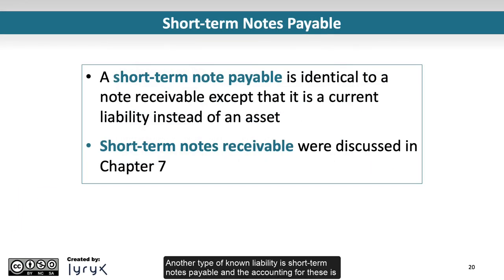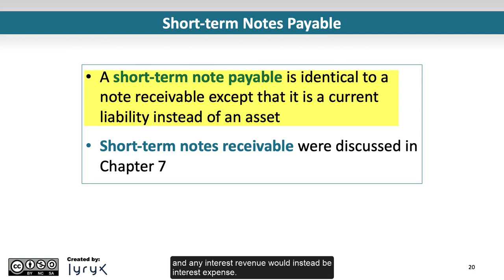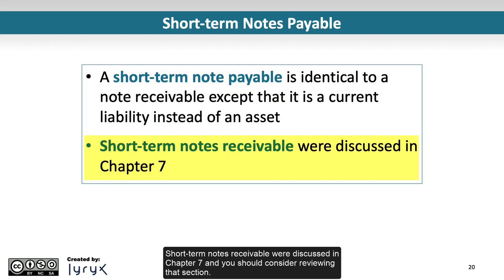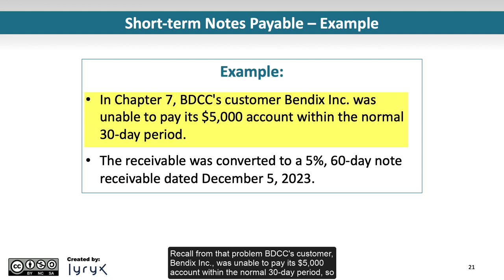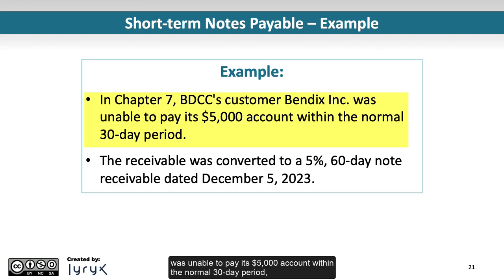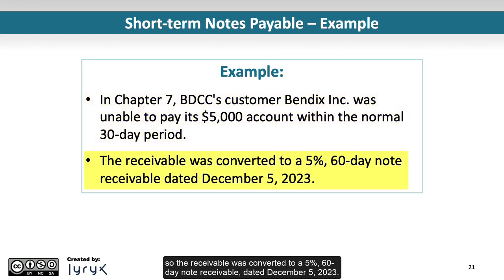Another type of known liability is short-term notes payable, and the accounting for these is virtually identical to a note receivable, except that it is a current liability instead of an asset, and any interest revenue would instead be interest expense. Let's look at a brief example of a short-term note payable based on the BDCC/Bendix Inc. example covered in Chapter 7. Bendix Inc. was unable to pay its $5,000 account within the normal 30-day period, so the receivable was converted to a 5%, 60-day note receivable, dated December 5, 2023.